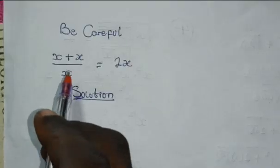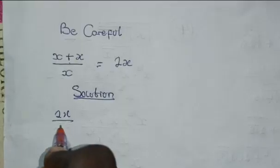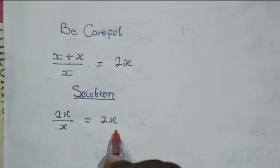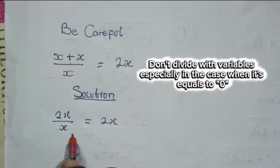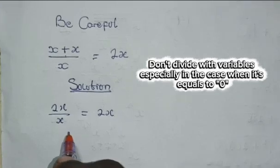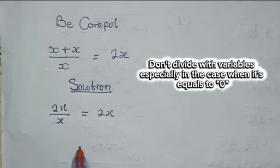Firstly, when you add up the numerator here, you have 2x divided by x equals 2x. I'm going to advise you not to divide by a variable, because if the variable is equal to 0, you can't get the real solution for x. And we don't know whether x is equal to 0 or not. So, let's just cross-multiply.